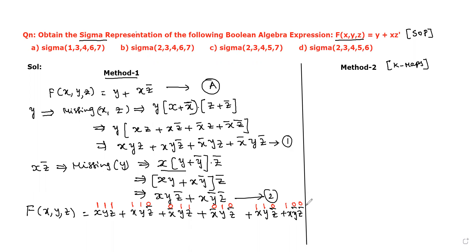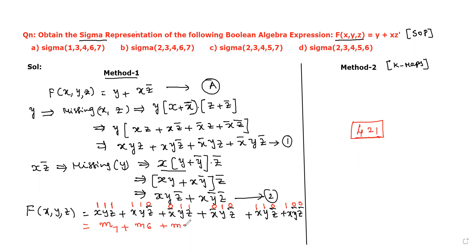There are 3 bits for every product in the Boolean function. To find the equivalent minterm number, we use binary weights 4, 2, 1. So 1,1,1 = 7 → m7. Then 1,1,0 = 6 → m6. Then 0,1,1 = 3 → m3. Then 0,1,0 = 2 → m2. Then 1,1,0 = 6 → m6 again. Then 1,0,0 = 4 → m4.